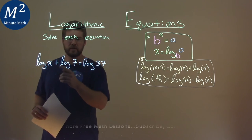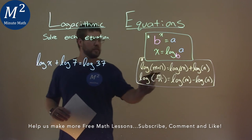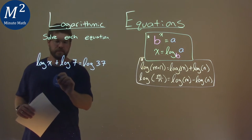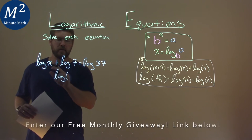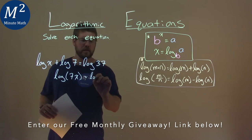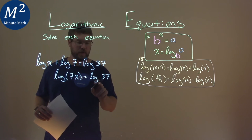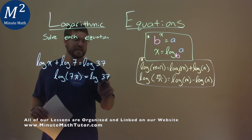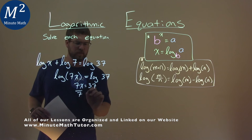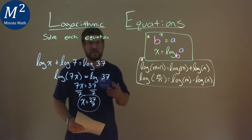We're given this problem: log of x plus log of 7 equals log of 37. We have to solve this equation. Since log of m plus log of n — with the same base — can be combined with multiplication inside a logarithm, log of x plus log of 7 becomes log of 7x, which equals log of 37. Since both sides are the same base log equal to each other, we set the insides equal: 7x equals 37. Divide both sides by 7, and x equals 37 over 7. That is our final answer.